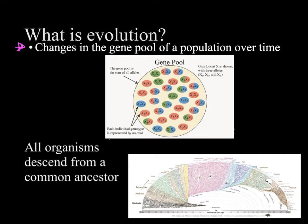A couple of important things to notice here. Evolution does not happen to an individual, and it doesn't happen instantaneously. Evolution occurs in entire populations over long periods of time, and it involves changes in the gene pool — the genes and alleles that are available.